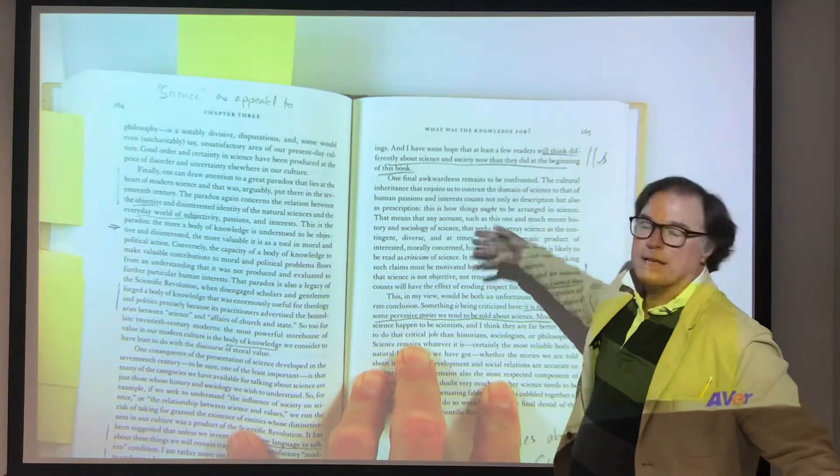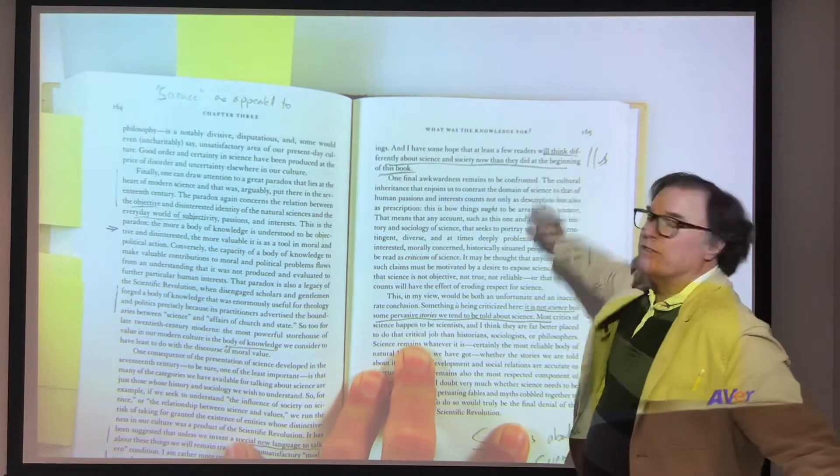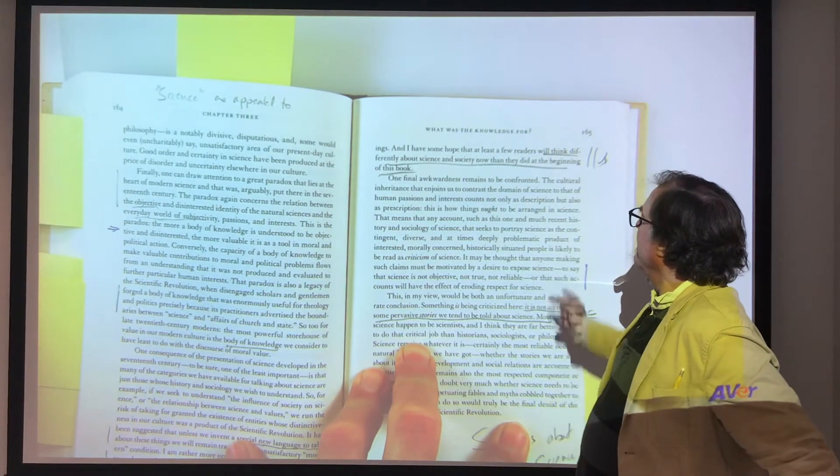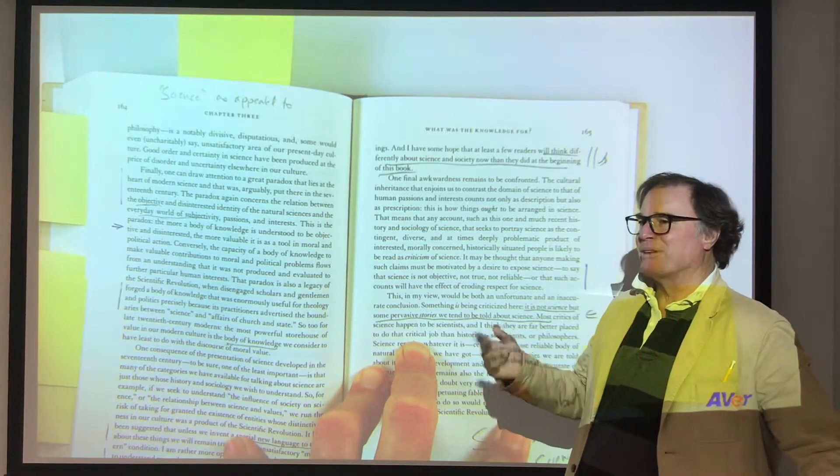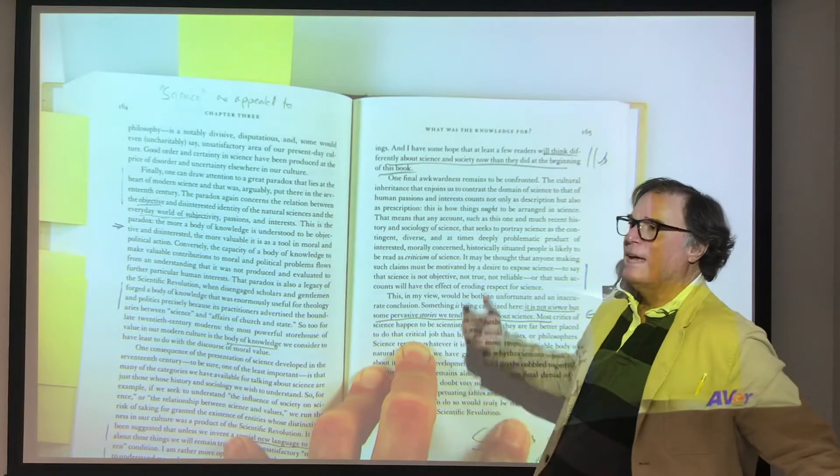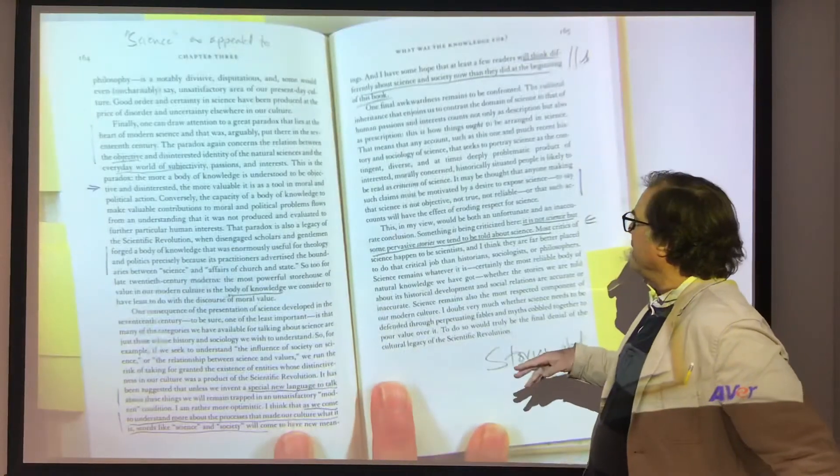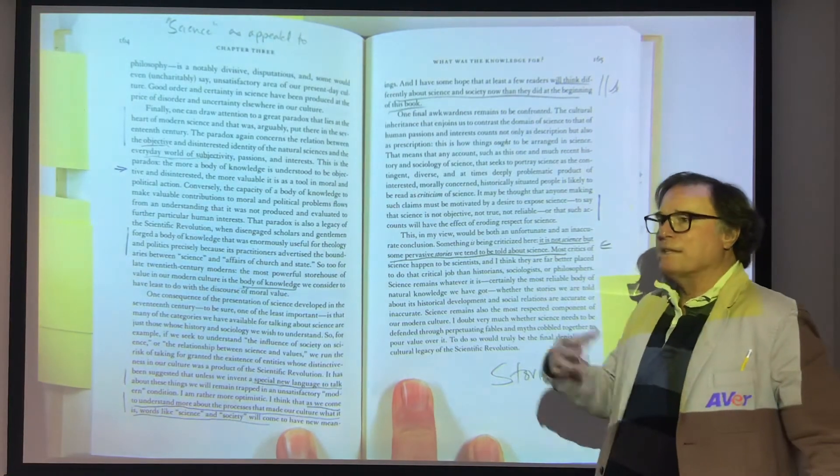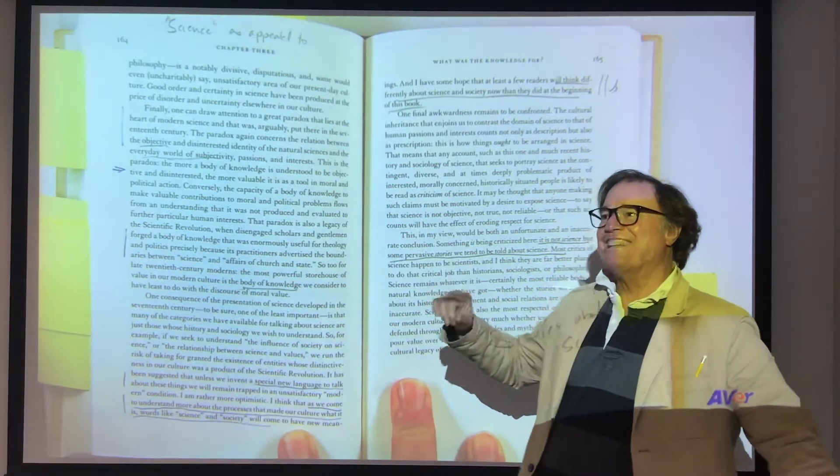This is the last page, okay. This is my hope for you and certainly why I read books like this and have some hope that at least a few readers - that's us - will think differently about science and society now than they did at the beginning of this book. This book is not simply some sort of factoid thing. It is to help us understand that the 17th century had a lot of wisdom which we have sort of messed around with.